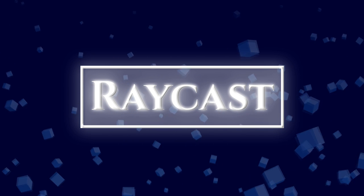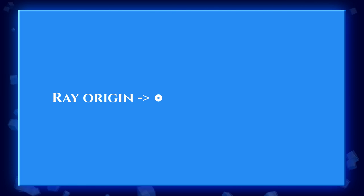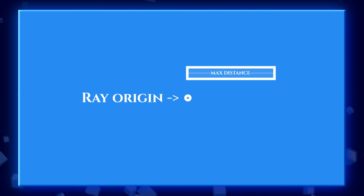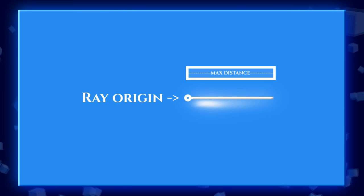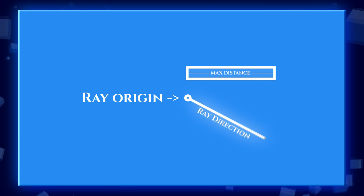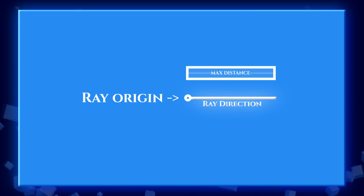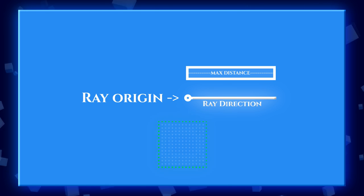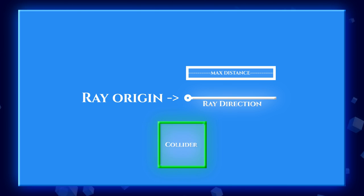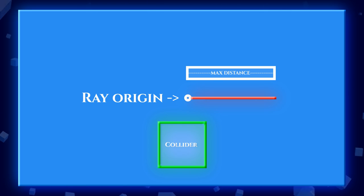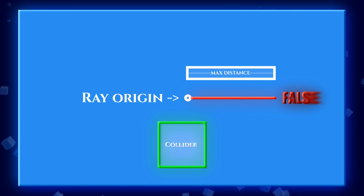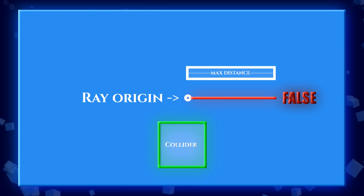So to put it bluntly, raycast is the act of throwing a ray from a very specific point in the world — just assume it's going to be a Vector3 — and shooting it in a direction until it reaches a certain distance. If that ray reaches the full distance without hitting any surface on the way, so we're talking about colliders here, any walls, any other player, then we can say that the raycast is false, meaning there is nothing in the way of that ray.